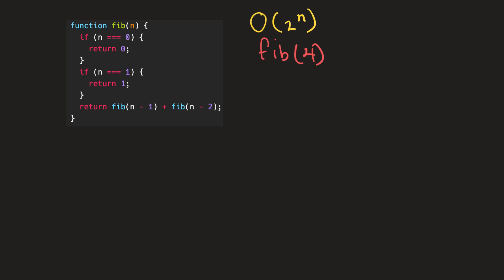If you're unfamiliar with Fibonacci and how it works, I have a video that offers a deep understanding of recursion and Fibonacci that you can access by clicking the link currently displayed on your screen. So back to our function call — we pass four into our fib function, and four is not equal to zero so we don't return zero, and four is not equal to one so we don't return one.